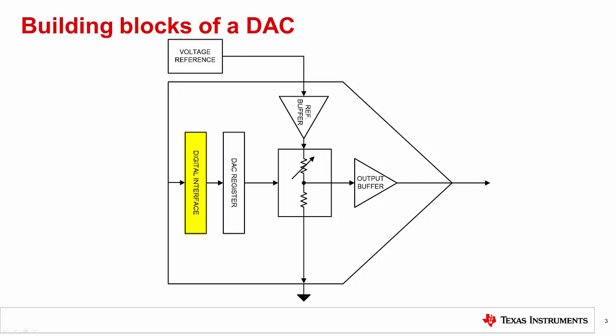Generally this interface is usually a parallel bus, an I2C bus, or an SPI bus. Some devices can even support multiple bus types. Next we have the DAC input register. This register stores the value that is currently being written to the device.